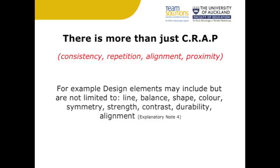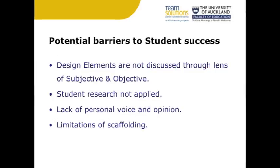Explanatory Note 4 suggests line, balance, shape, colour, symmetry, strength, contrast, durability and alignment are a sound starting point, but by no means are they a definitive list. Further feedback from the assessment reports for 2014 suggests that there are four main barriers to students achieving success within the standard: 1. Design elements are not discussed through the lens of subjective and objective. 2. Student research is not applied. 3. There is a lack of personal voice and opinion. 4. Scaffolding can be limiting to student success.